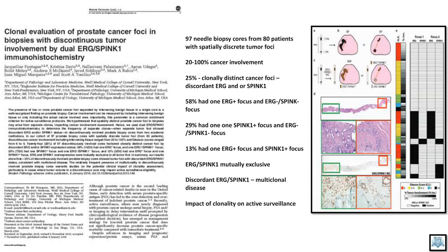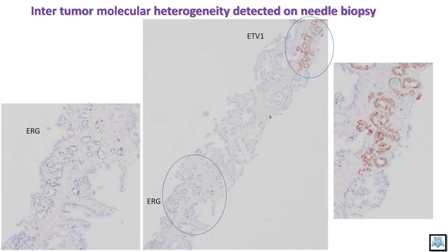We can demonstrate this type of heterogeneity even in needle biopsy. Combining more than one marker in a multiplex approach will reveal important information we were not aware of before. Here I am showing an example of inter-tumor molecular heterogeneity detected in a needle biopsy sample — one tumor foci at one end of the biopsy, another at the other end. We combined both IHC and RNA-ISH where we see one foci positive for ERG and the other tumor positive for ETV1. This is the zoomed-in view of both ETV1 and ERG, clearly demonstrating two distinct foci with different molecular aberrations — one ERG, the other ETV1 — separated by high-grade PIN or stromal tissue.